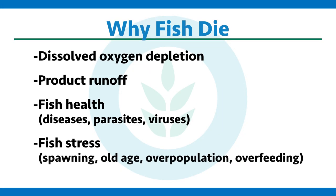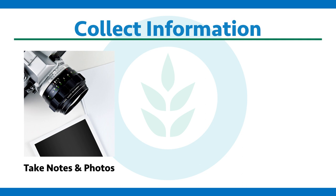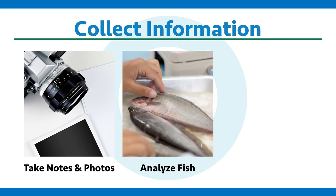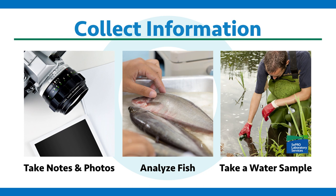There are many other reasons why fish can die — stress due to spawning, old age, or just being overpopulated or overfed in a water resource. There's much information that needs to be collected if you're encountering a fish kill. Take good pictures and detailed notes of all occurrences that led up to the event. You can also sample fish, freeze them, and get them analyzed by a professional to look for diagnostic symptoms. Take a water sample, have the water chemistry and dissolved oxygen levels analyzed — all of these can be very useful in determining the cause of your fish kill.